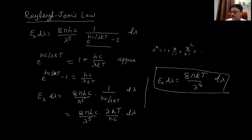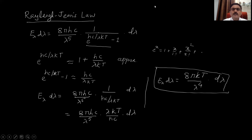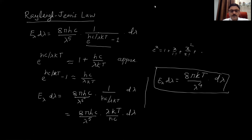In this simple way, we can derive Wien's distribution law and Rayleigh-Jean's law by using Planck's radiation law. I hope you have understood this lecture. If you liked it, please like and share this video so that I will be encouraged to prepare more interesting lectures for you. Thank you for watching.